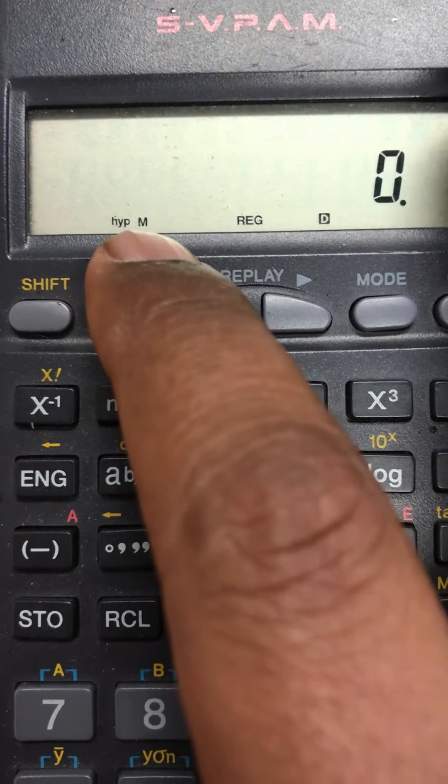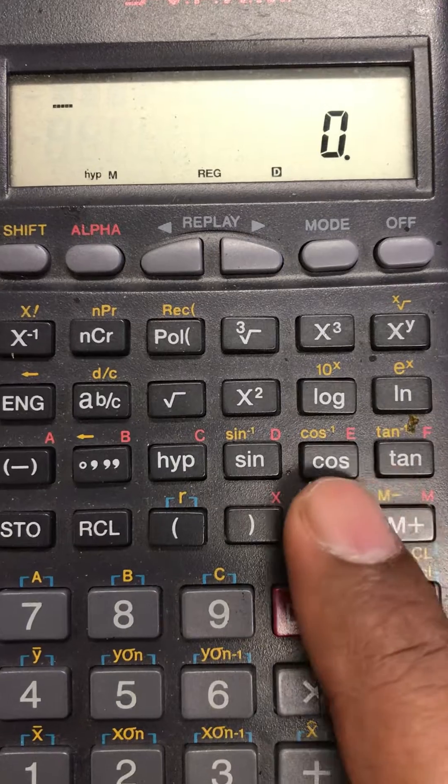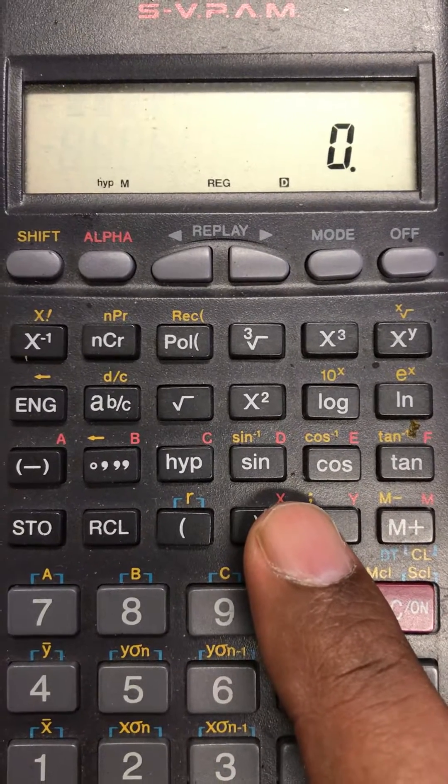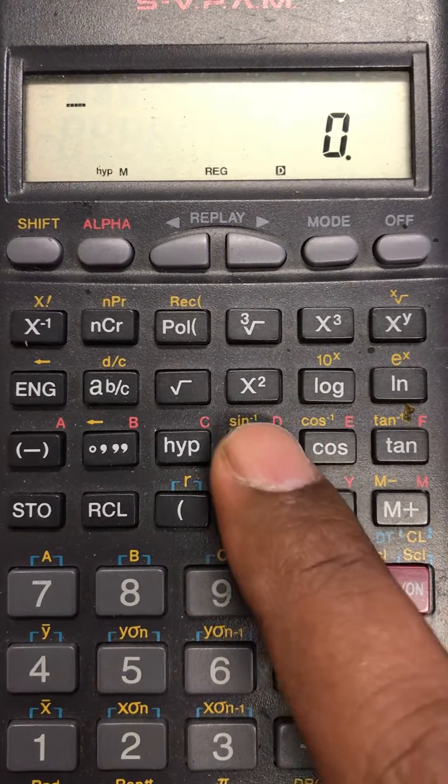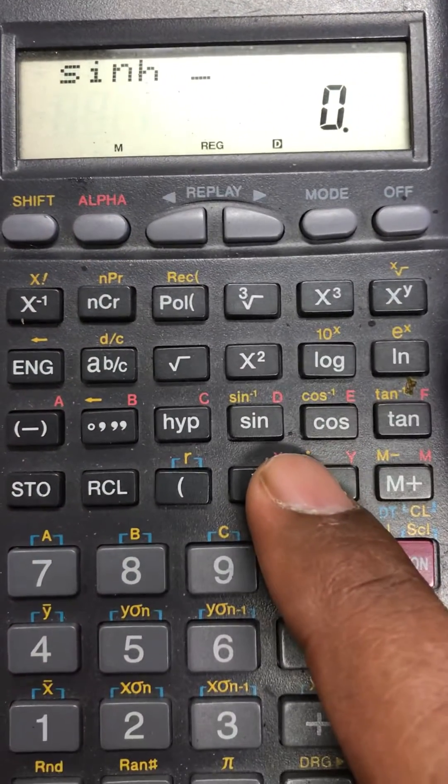That is the only time you can use it. You have to press it every time you want to use the hyperbolic function. If you want to find the sine of any value, press sine. You will see the letter sine and then the H which stands for the hyperbolic sine function.